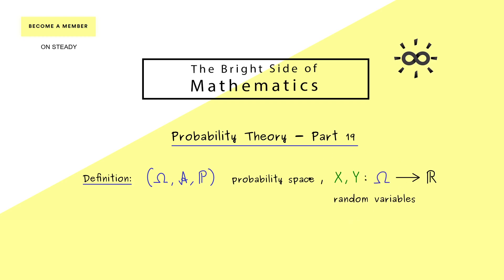Moreover, we need some assumptions there, because we will calculate some integrals. For example, we need that the expectation of X exists. However, we have seen it for the variance definition, we also need that the expectation of X squared exists.